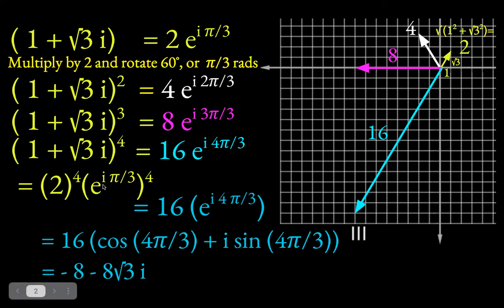Again, you probably want to skip right away to this method. Once you have an expression for the complex number to the first power, just raise this magnitude to the fourth, and then introduce another 4 into the exponent.